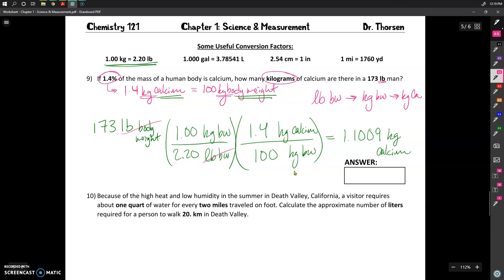So that my final answer is actually just going to be 1.1. And that's because of the conversion factor between the kilograms of calcium and kilograms of body weight. Notice here that this had 1.4, which has the sig figs of 2. And so our final answer should have a sig figs of 2.